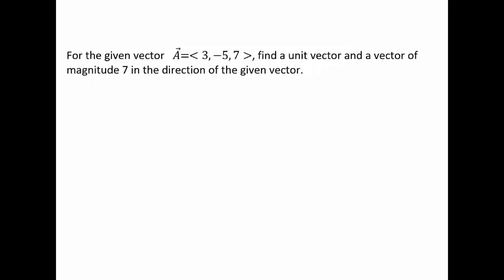We are given a vector A with components 3, negative 5, 7 in three dimensions. We need to find a unit vector and a vector of magnitude 7 in the same direction of the given vector A.